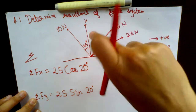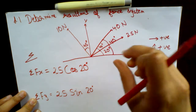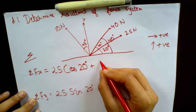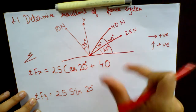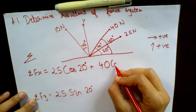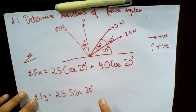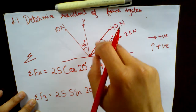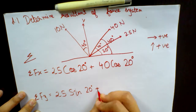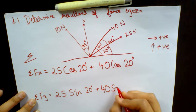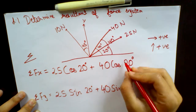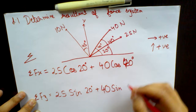The second force is 40 Newton making an angle of 40 degrees with the x-axis. So this gets added as 40 cos 40 degrees for the x-component. For the sine component, again it is in the upward direction, so it is positive — plus 40 sin 40 degrees. I am sorry, the angle is not 20, it is supposed to be 40. So it is 40 sin 40 degrees.